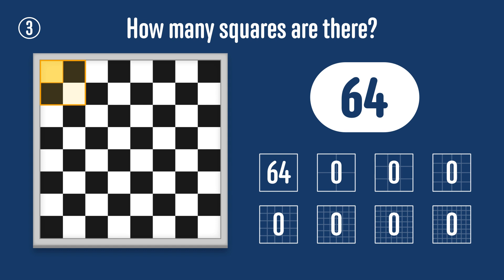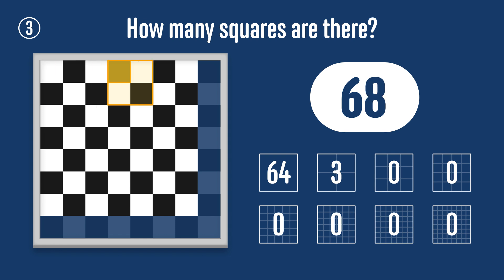Now, how many two by two squares are there? The top left corner of a two by two square can be anywhere except in the bottom row or the right hand column. So the top left square can be in any of the remaining squares. There are seven times seven or 49 of these.